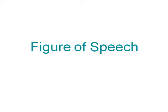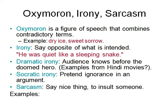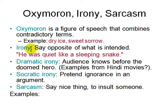Now we're going to look at figures of speech: oxymoron, irony, and sarcasm. An oxymoron is a figure of speech that combines contradictory terms. For example, 'dry ice' or 'sweet sorrow' — that's from Romeo and Juliet.